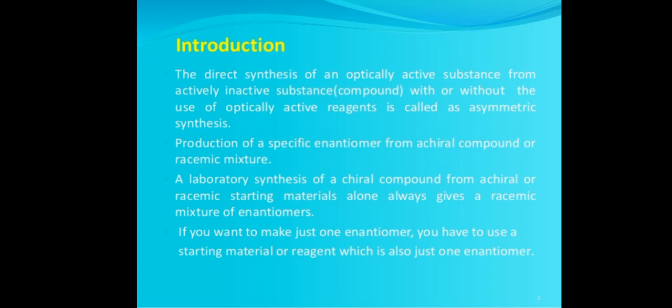Asymmetric synthesis involves the production of a specific enantiomer from a chiral compound or racemic mixture. A laboratory synthesis of a chiral compound from achiral or racemic starting materials alone always gives a racemic mixture of enantiomers. If you want to make one specific enantiomer, you have to use a starting material or reagent which is also just one enantiomer.